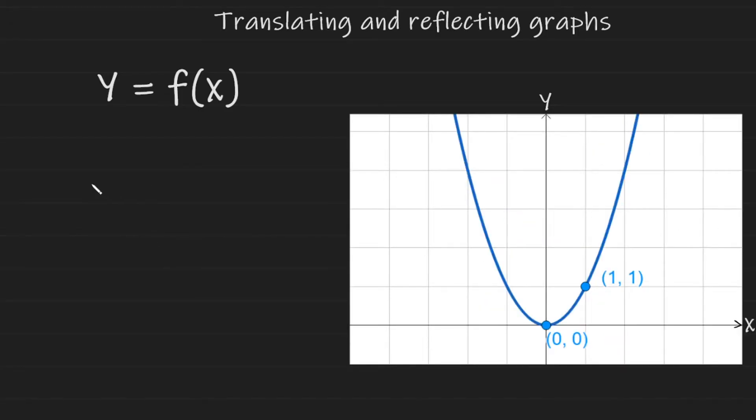For our second reflection, I'm going to make the inside of the function, so inside of the bracket, negative. And this is what it looks like. Doing this changes the graph to look like the following.